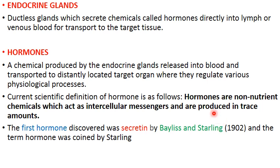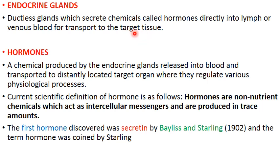Coming first to endocrine glands — these are actually ductless glands, meaning without ducts, in contrast to exocrine glands in the alimentary canal which pour their secretions via ducts. Since endocrine glands don't have ducts, they secrete chemicals called hormones directly into the lymph or venous blood. This blood reaches all parts of the body, but only certain organs or tissues respond to these hormones, and these are called target tissues.